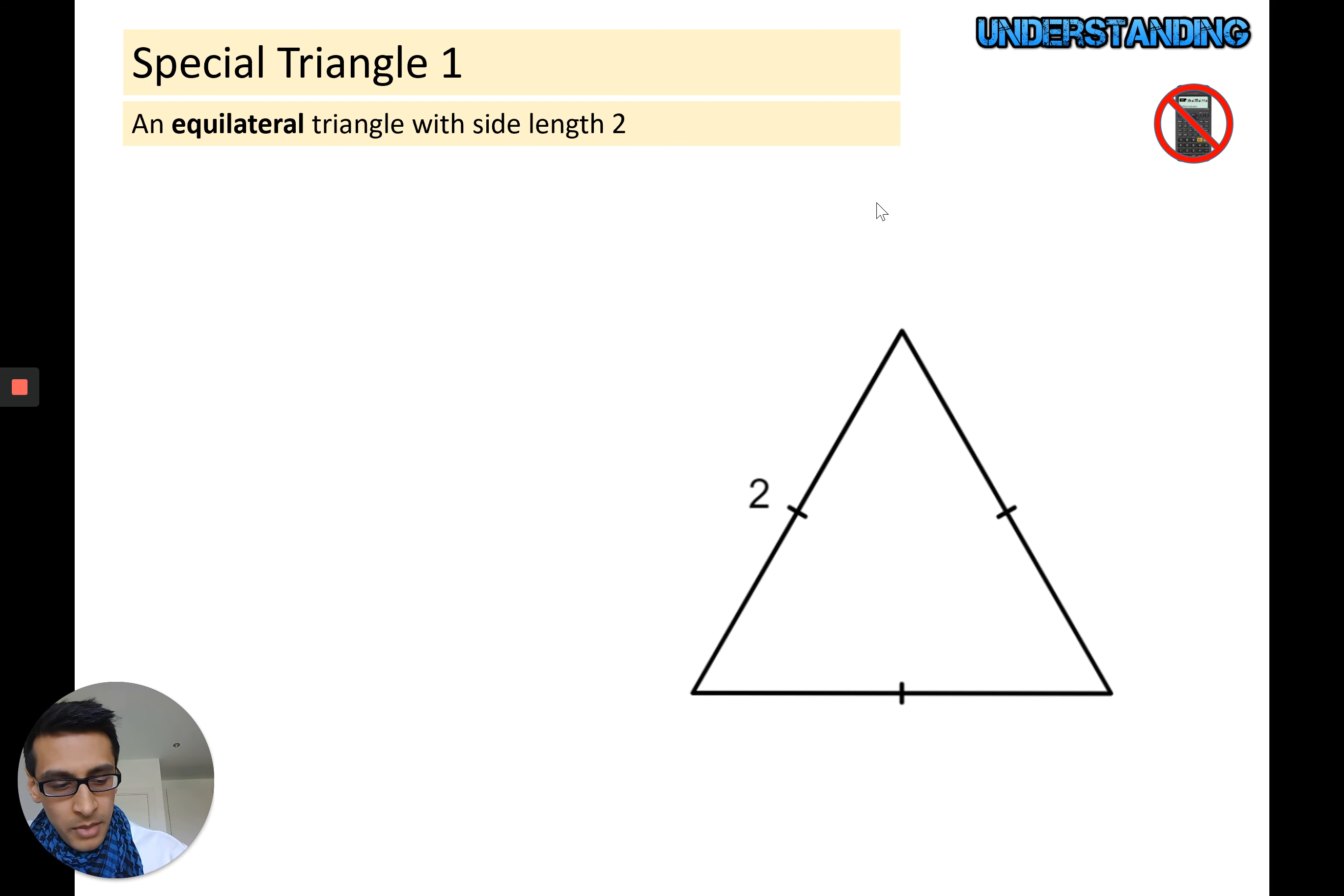Special triangle one: you don't have to copy this out, just listen to the explanations and make sure it makes sense to you. Then I'll talk about how we can memorize these things. An equilateral triangle with a side length two. So all the sides are two. Question is, if you split this in half, what are the angles? If it's an equilateral triangle, all of the angles have to be 60, except on the top because I split it in two, that's going to be 30. 90 on the base because it's a right angle triangle.